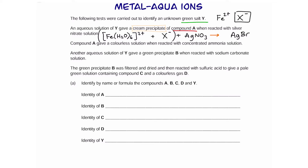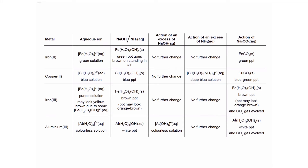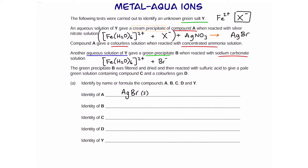Compound A gave a colourless solution when reacted with concentrated ammonia — this is true for silver bromide, confirming compound A is silver bromide (solid, as it's a precipitate). Another aqueous solution of Y forms a green precipitate when reacted with sodium carbonate. Iron(II) hexa-aqua ion forms a green precipitate with carbonate ions, so the green precipitate must be iron(II) carbonate.